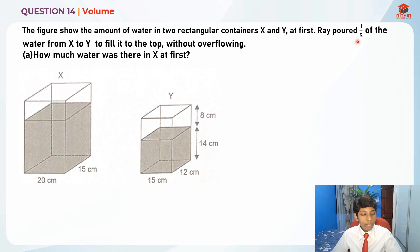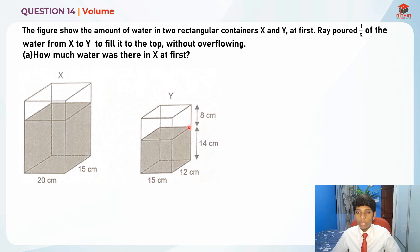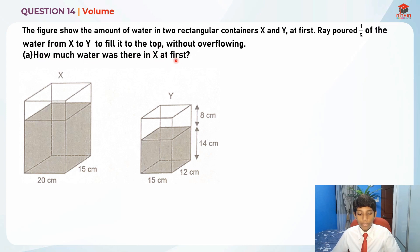Ray put one-fifth of the water from X to Y to fill it to the top without overflowing. For part A, they are asking us how much water was there in X at first. So let's do this question.